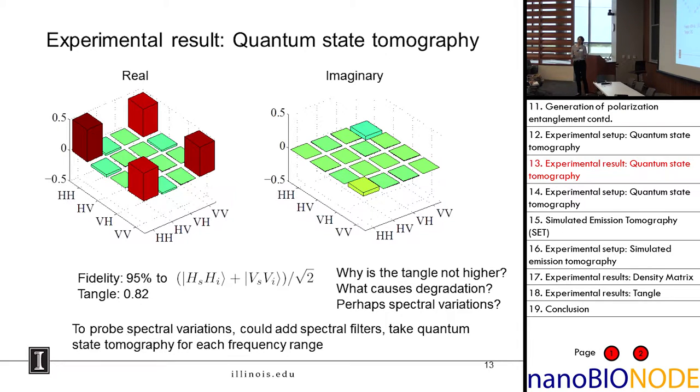You can also quantify exactly how good this entanglement is using a quantity called the tangle. The maximum possible tangle is 1. Our tangle is 0.82, typically about 0.7. Above 0.7 is something that can be useful for quantum applications. So it's fairly useful, we could use this source. But the question arises - why isn't it perfect? Why is it not higher? What causes degradation in the source? And then you start thinking about all the other degrees of freedom in your setup.